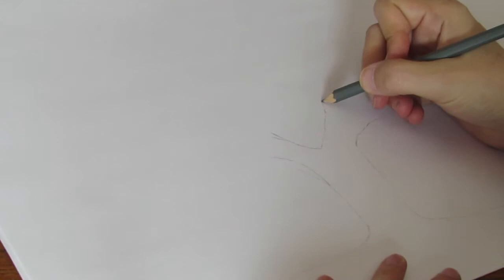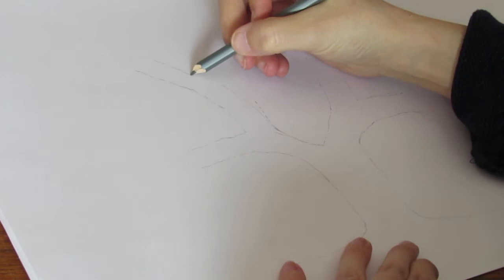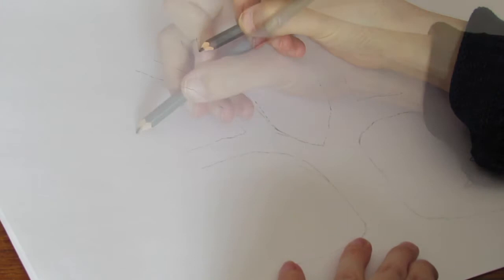and then you just carry on like this, splitting each branch roughly into two twigs on the end.